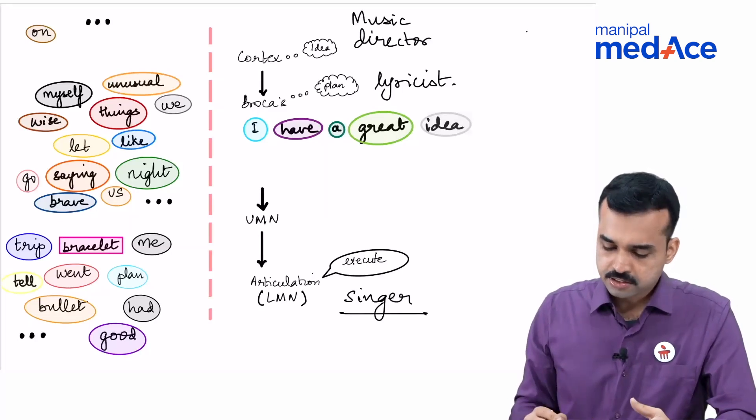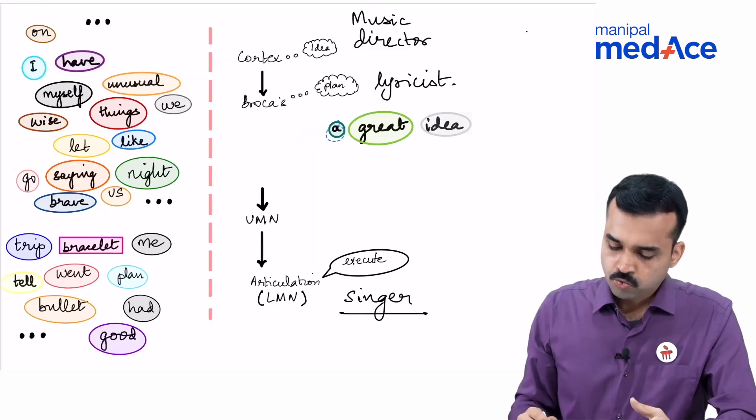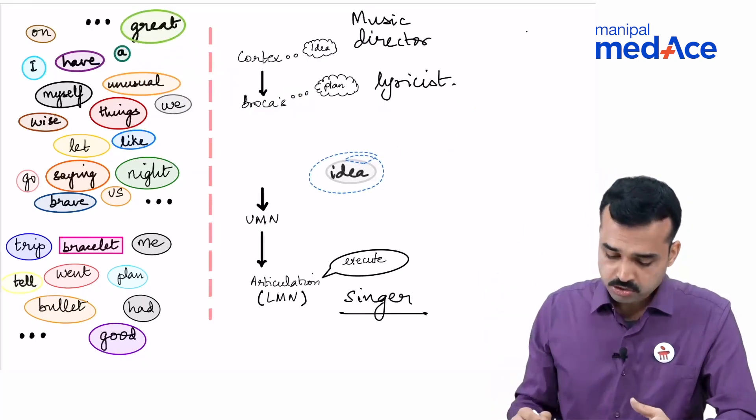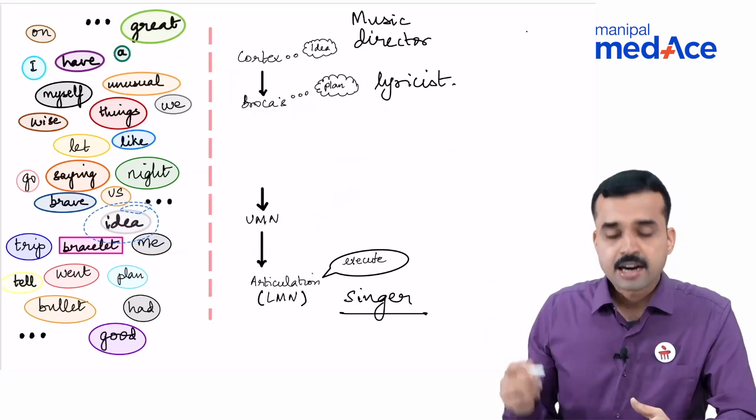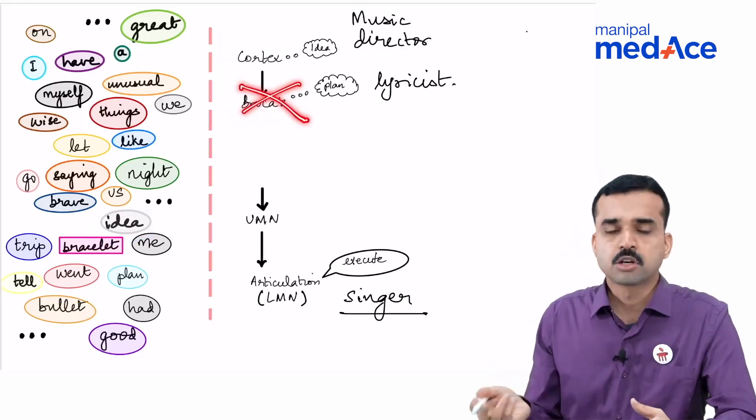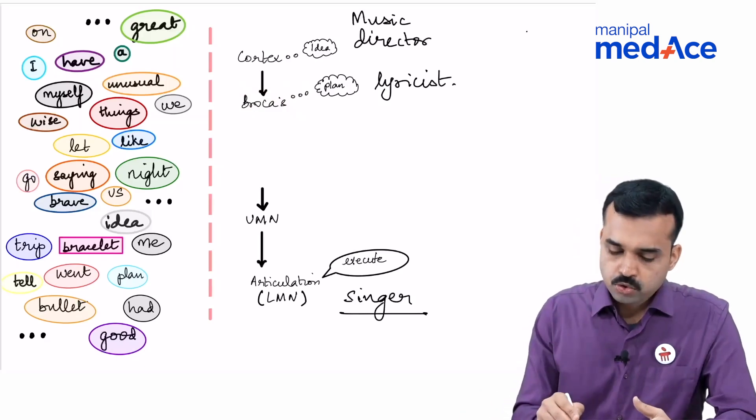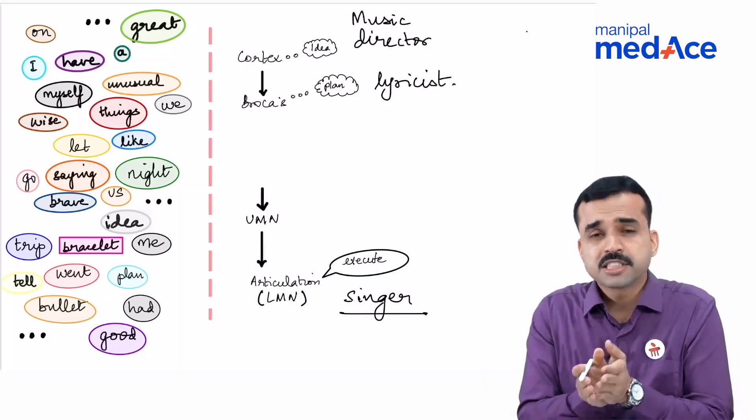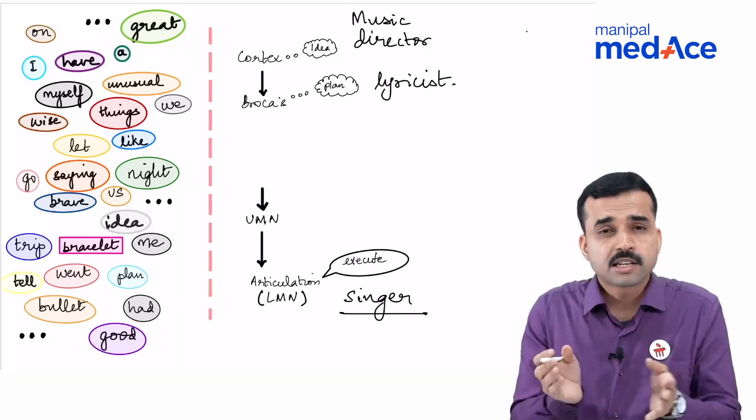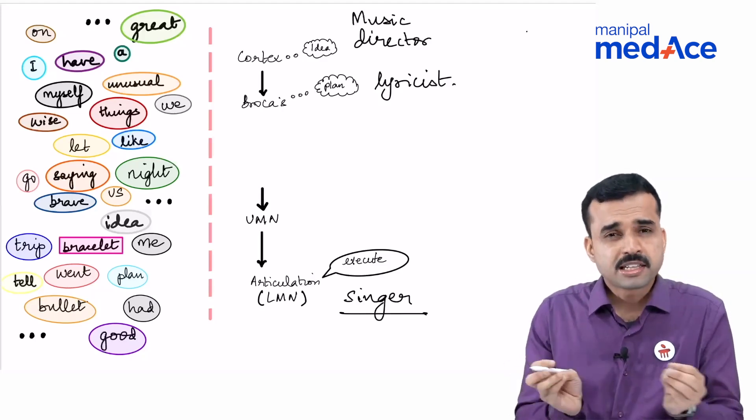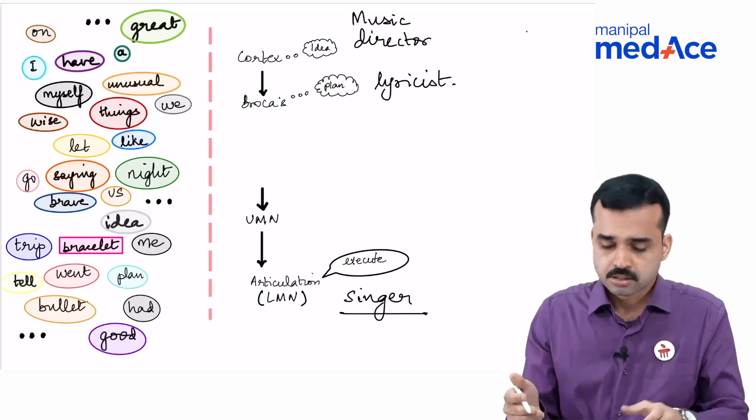Instead, let us imagine that a patient has Broca's aphasia. What would happen to this same idea? Now the cortex, the higher center, wants to say the same thing and it has conveyed this to the Broca's area. But there is a defect in the Broca's area. Broca's area is not working. So even though the Broca's has gotten the inputs, it is not able to form the sentence. It is struggling. Where are the words? Which are the words I need to select? What is the right grammar I need to use? Is the syntax going to be correct? And there will be pauses in between. It is taking too long to be able to decide and judge.